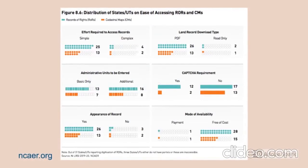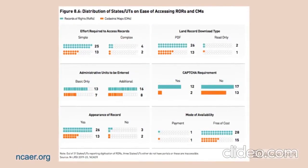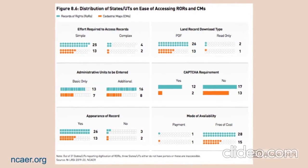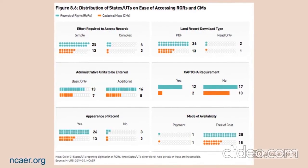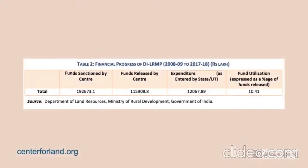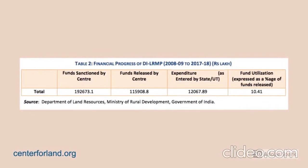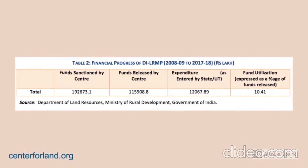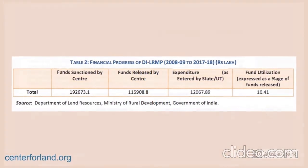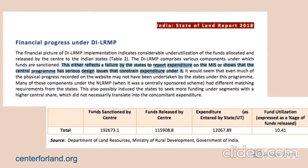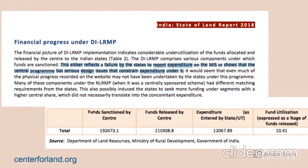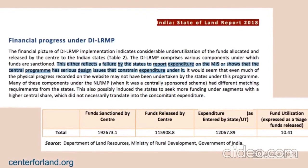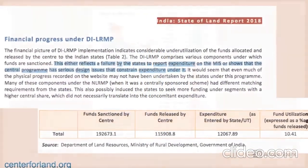While many states are benefiting from the digitization of the registration process, it is important to note that they may not be operating to full capacity. Out of the funds released by the center as of 2018, only about 10.4% has been utilized. This could either be a lack of accurate reporting of how the funds are utilized, or could be because of a flaw in the design of the scheme.